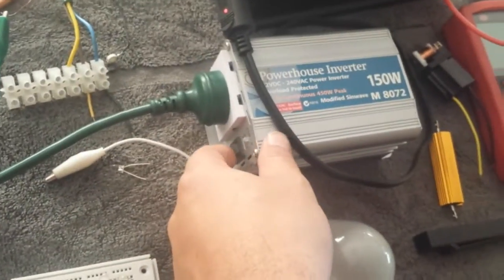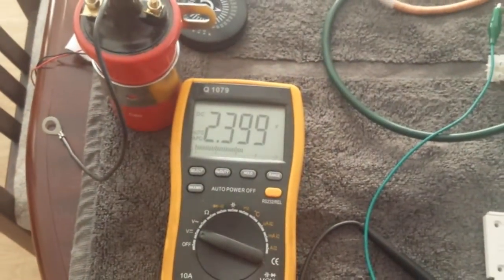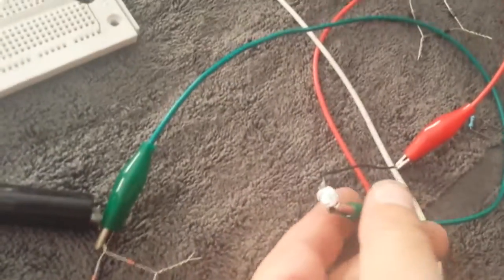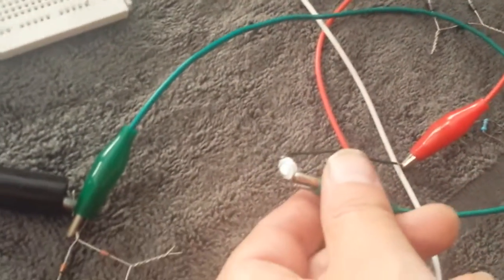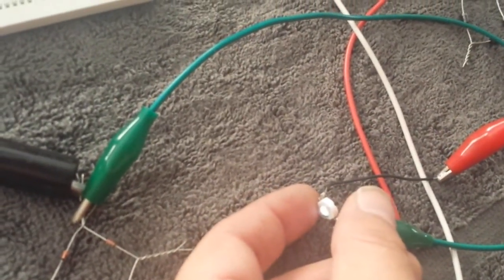We'll just turn the inverter on. You can see I'm getting about 2.3, 2.4 volts. And that's powering this LED, I'm sure if you can see that, you can see it's on, you can see the light on my finger.